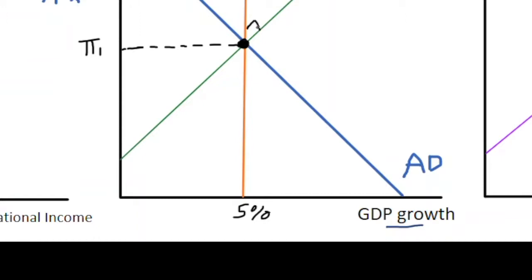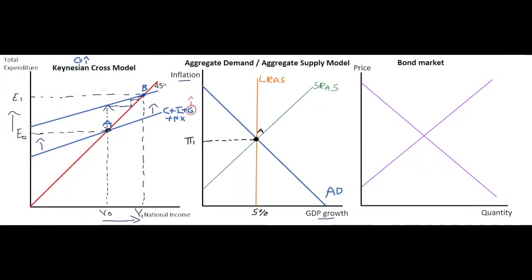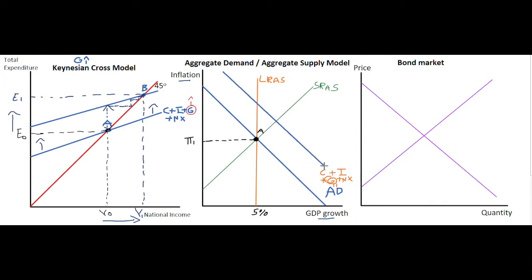The Keynesian cross is telling us that when the government spends additional money in the economy that increases expenditure and national income even to a greater degree. We know that AD is made up of the same components as spending in the Keynesian cross: C plus I plus G plus NX. If government spending increases, we increase aggregate demand in the economy, shifting aggregate demand to the right, which we call AD1.